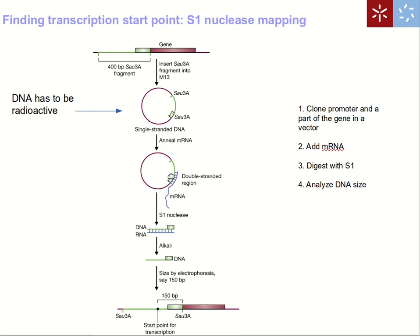We mix this radioactive single-stranded DNA with mRNA from a tissue or other source, and part of the mRNA will hybridize to it. We then degrade all remaining single-stranded DNA and RNA with S1 nuclease, leaving a double-stranded DNA-RNA hybrid. We remove the RNA and analyze the DNA by electrophoresis. The length of this fragment tells us the distance between the restriction site and the starting point of transcription.